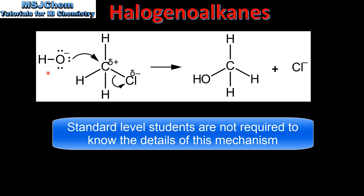Next we'll have a quick look at the mechanism of the reaction. Here we have the hydroxide ion, which is a nucleophile. The nucleophile is attracted to the electron-deficient carbon in the halogeanoalkane. The chlorine atom breaks off from the molecule forming a chloride ion, and the hydroxide ion bonds to the molecule forming an alcohol.